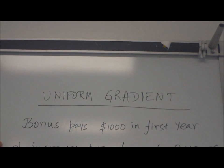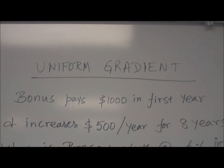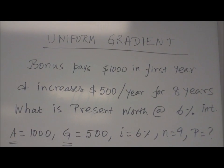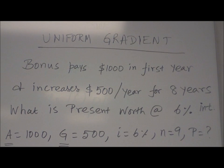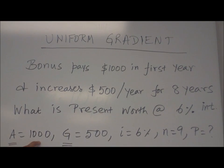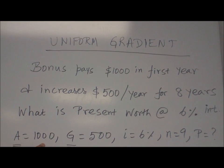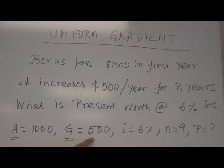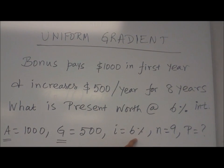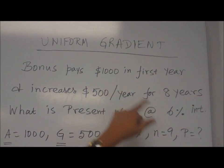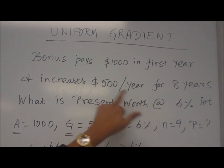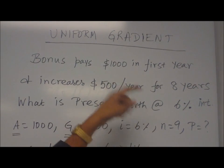A uniform gradient. Here let us say bonus you receive that pays one thousand dollars in the first year. And increases five hundred dollars per year for eight years. What is present worth at six percent interest? So what we know is A is one thousand. The gradient, every year five hundred dollar increase. This is G equal to five hundred. Interest I equal to six percent. N equal to nine. Because first year you receive thousand. Then for next eight years you get five hundred dollars extra. So total number of period, one plus eight, nine.